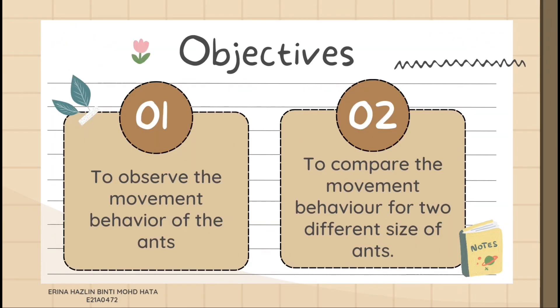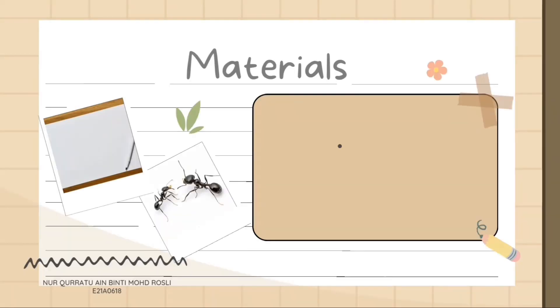Next is the objective. There are two objectives. The first is to observe the movement behavior of ants. The second is to compare the movement behavior for two different sizes of ants.